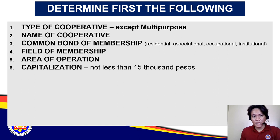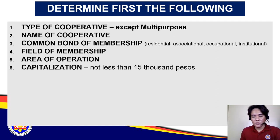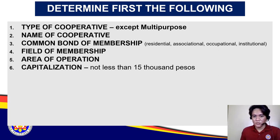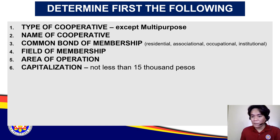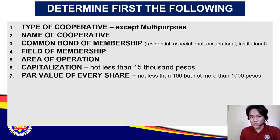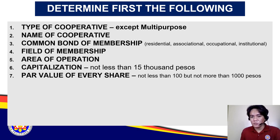From those who attended the seminar, you should have already generated or consolidated your capitalization. Recall that the required initial paid-up capital should not be less than 15,000 pesos — that is, paid-up capital collected from the members. Also determine the par value per share, which should not be less than 100 but not more than 1,000 pesos, and divisible by 1 peso.